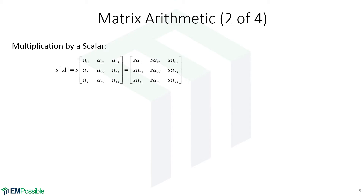What if we multiply a matrix by a scalar? We go into the elements of the matrix and multiply every single one of them by that scalar S.